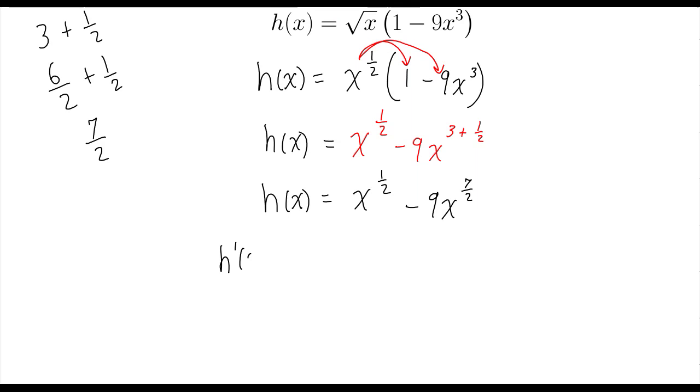So the derivative of the function is equal to multiply 1 half times 1, so 1 half is 1 half. x to the 1 half power, that's going to be negative 1 half.